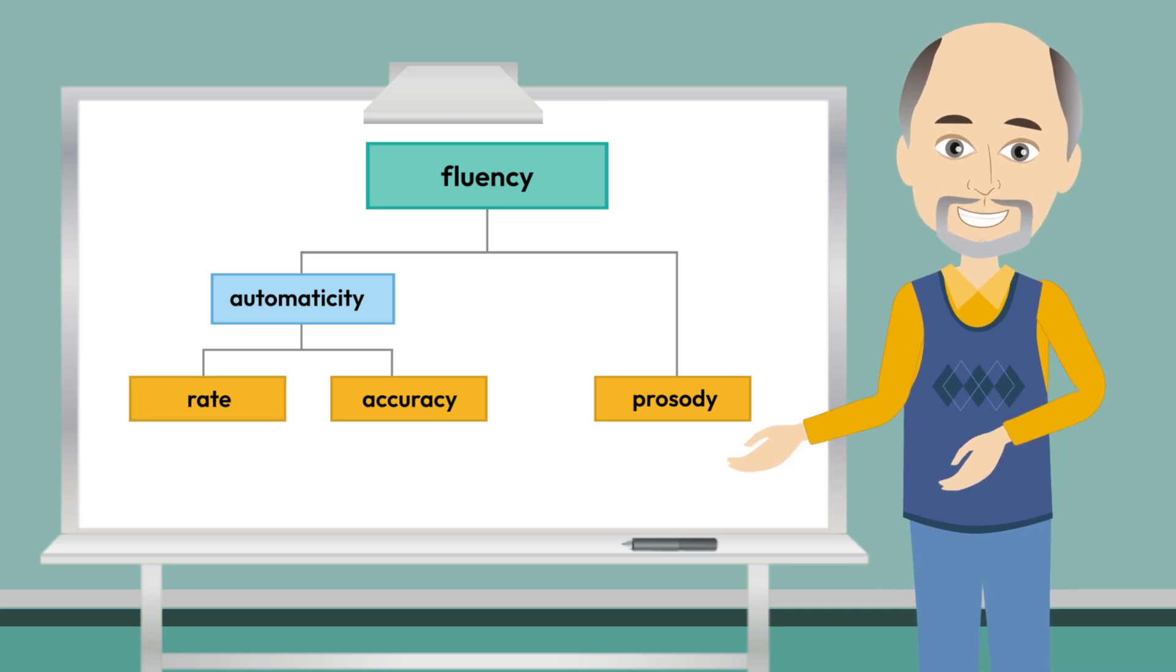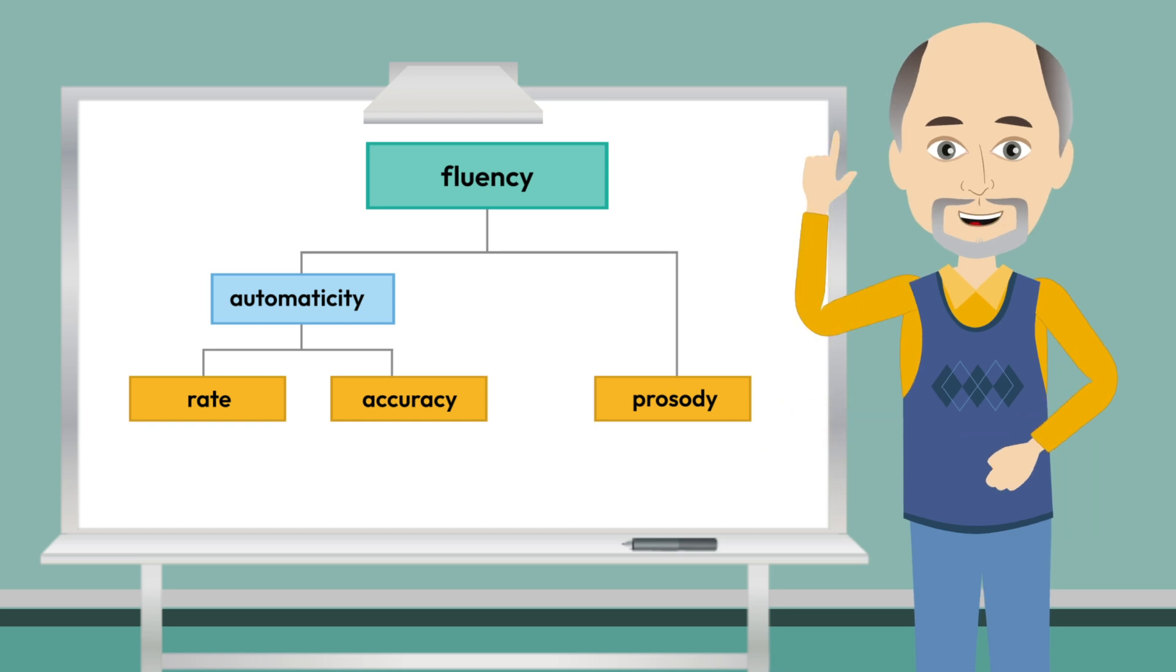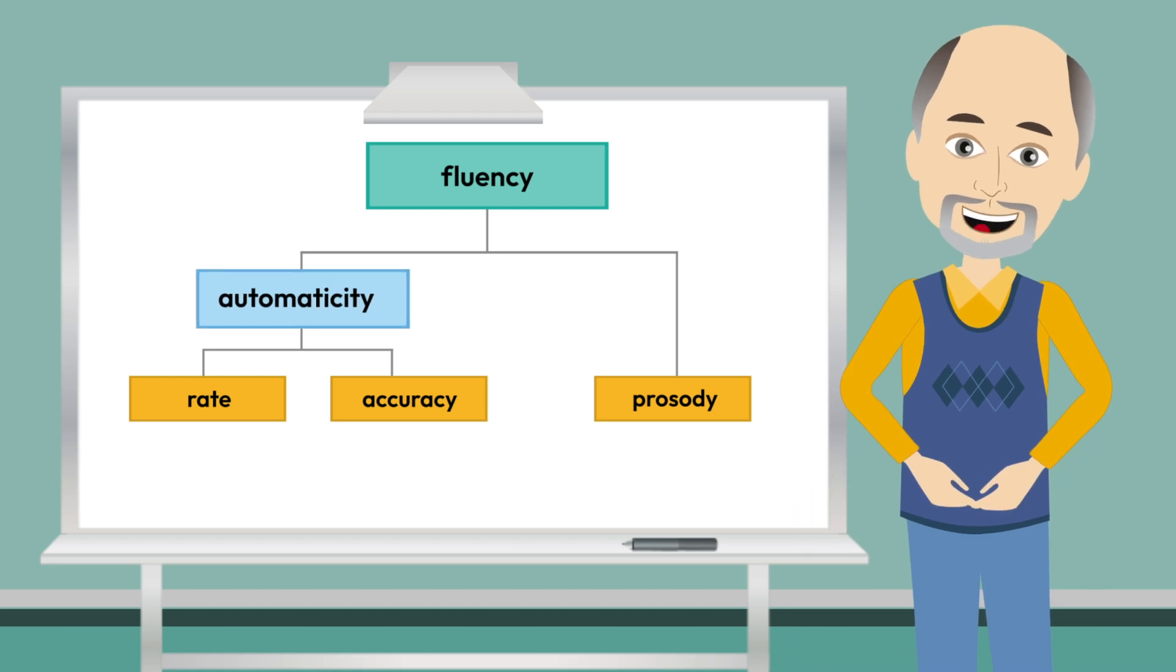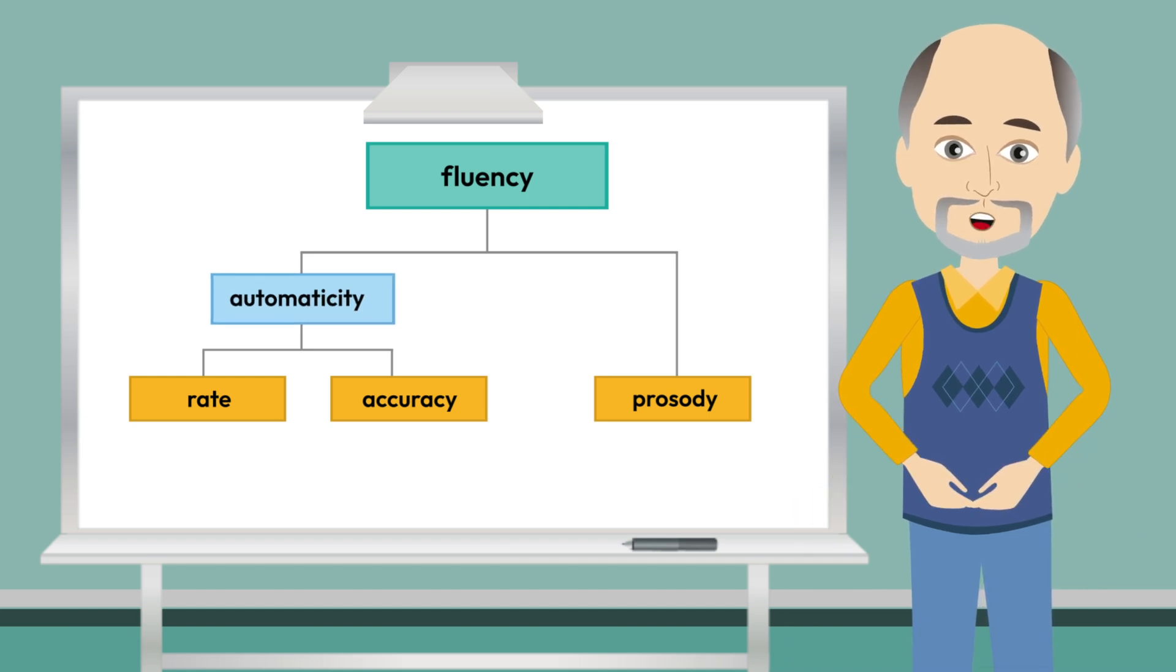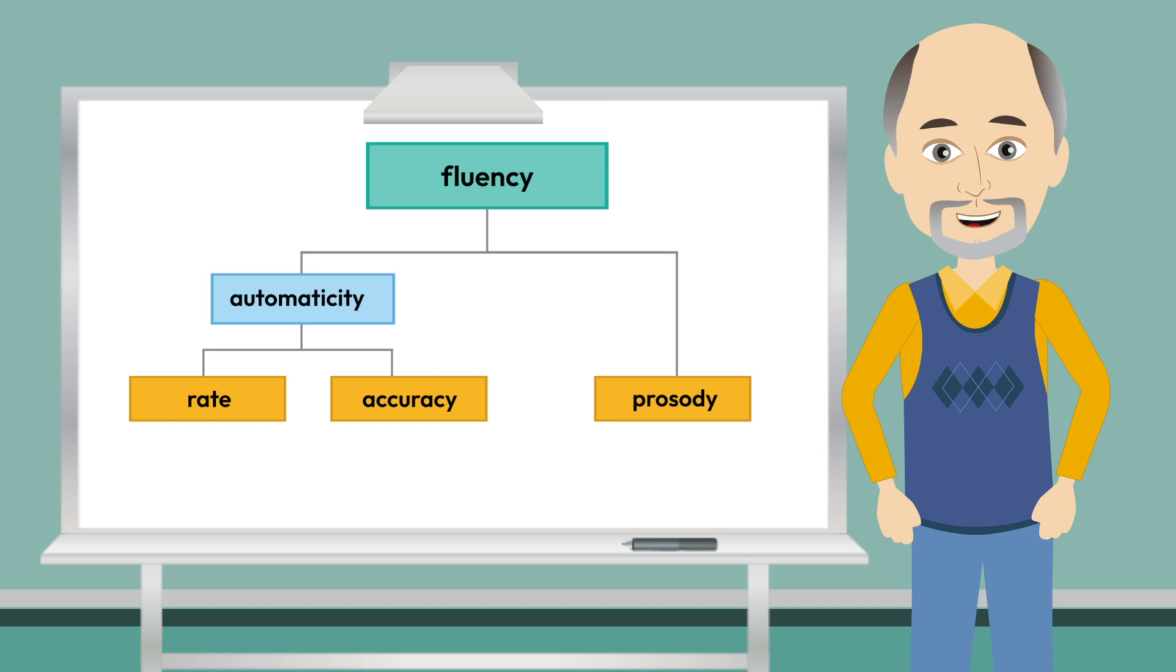Rate often is equated to the number of words a student can read per minute, but in reading connected text it generally means being able to read the text at a conversational pace. The term automaticity is often used in place of rate, but really it is a combination of accuracy and rate.